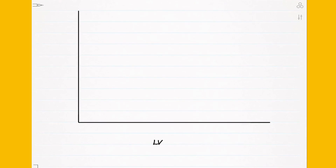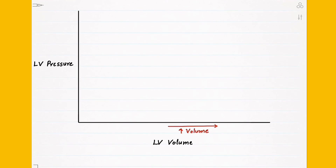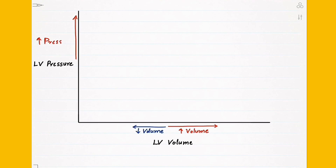Now that we understand the cardiac cycle, we can begin with the normal pressure volume loop, which is a graph that depicts the series of events occurring during a normal cardiac cycle but in the left ventricle only. The x-axis is for left ventricular volume and the y-axis is for left ventricular pressure. If the line moves right along the x-axis, the volume of the left ventricle is increasing; if it moves left, volume is decreasing. If it moves upward along the y-axis, pressure is increasing; if it moves down, pressure is decreasing.